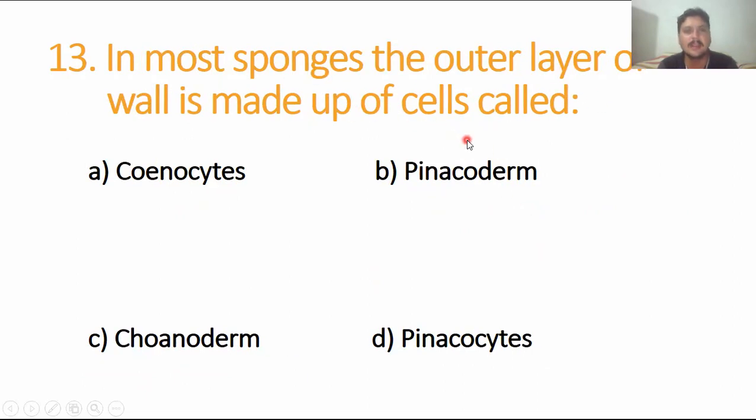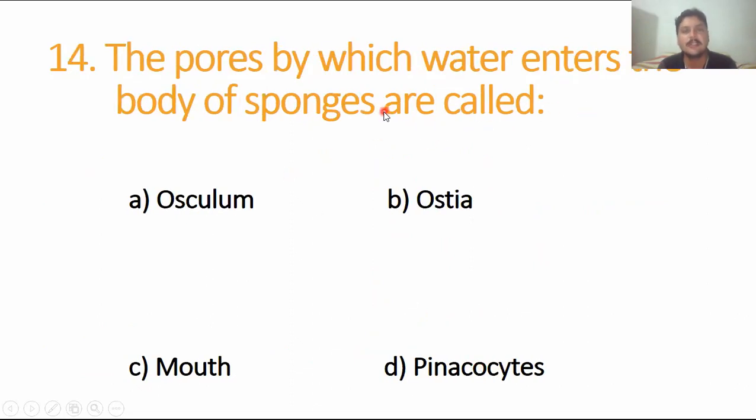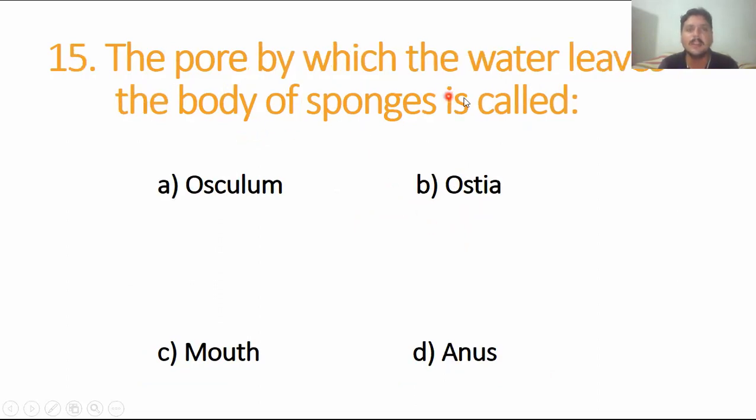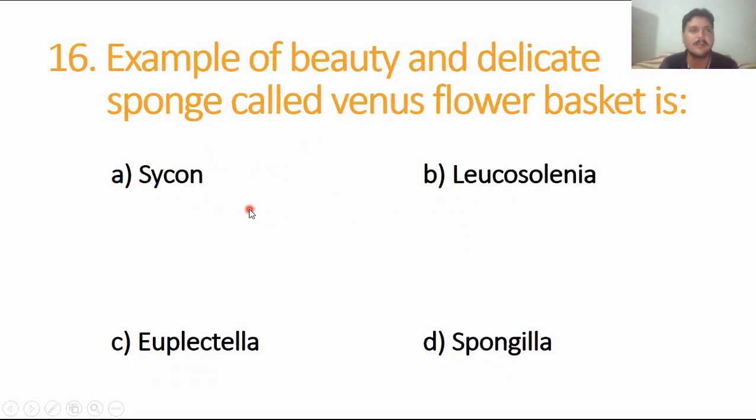In most sponges, the outer layer of wall is made up of cells called pinacocytes. Pinacocytes is the right answer. The pores by which water enters into the body of sponge are called ostia. Water leaves out the body of sponge through a pore called osculum, option A for MC number 14. Example of beautiful and delicate sponge called Venus flower basket is Euplectella. Option C is the right answer.